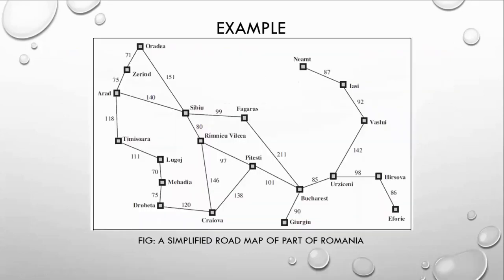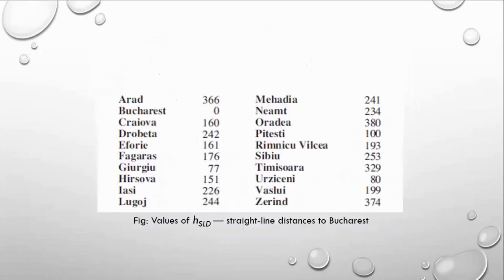Let's discuss about the A* algorithm with an example by taking the Romania map. This is a simple road map of Romania — part of Romania — and we will take Arad as a source and Bucharest as a destination. This algorithm should find out the shortest distance between Arad and Bucharest. This is a heuristic value for each and every city, which can be obtained by measuring a straight line distance between each city to Bucharest. Assume these are some values — from Arad to Bucharest, we will take around 366 km and so on, which is represented for each city.